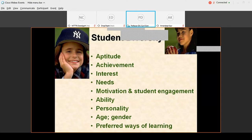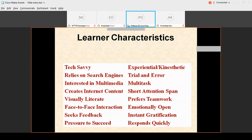The characteristics of today's learners are that they are tech savvy. They rely on search engines. Whenever they want some information, they quickly access the search engine. They are interested in multimedia. They create internet content. They are visually literate. They engage in face-to-face interaction. They seek feedback immediately and they also pressurize themselves to succeed. They are experimental, experiential, kinesthetic, use trial and error, multitasking. But they have got short attention span on one activity.